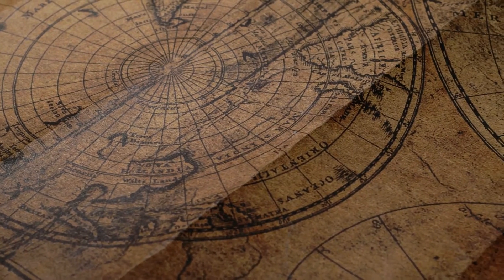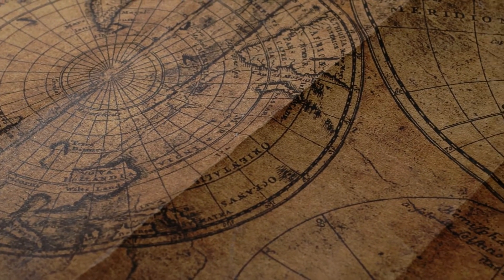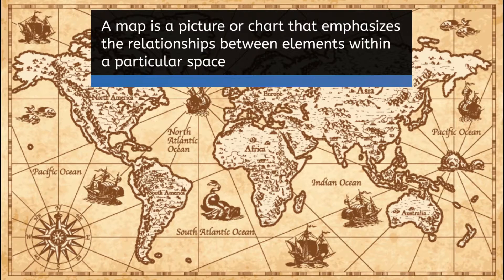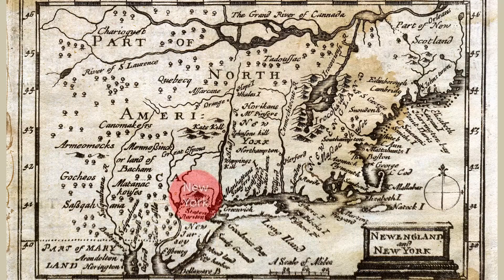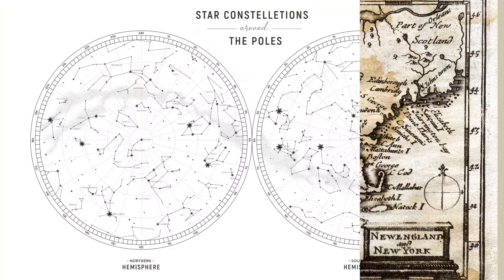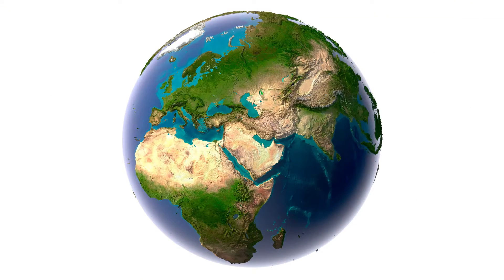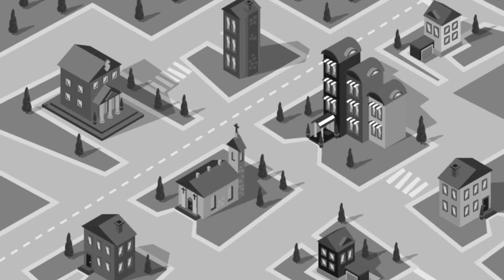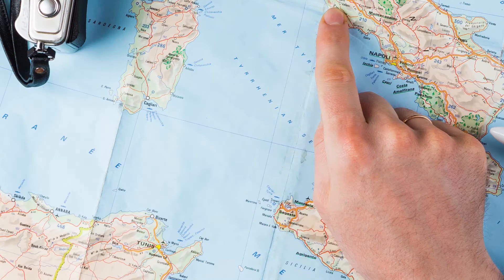And how could they record what they discovered and share this information with others? One way to do it, they found, was to make maps. A map is a picture or chart that emphasizes the relationships between elements within a particular space. It might show cities, roads, rivers, or other physical features. It might show stars, ocean depth, or even just the various points of interest in your neighborhood. In any case, visualizing what's around us by communicating spatial relationships between things has become very useful.